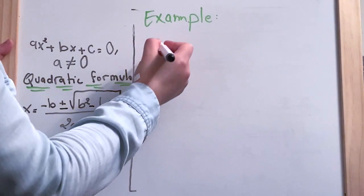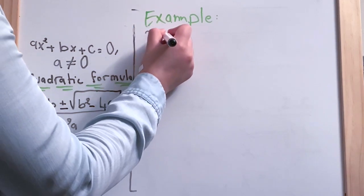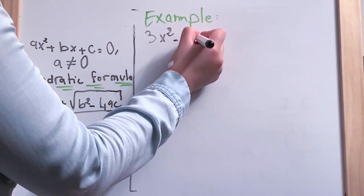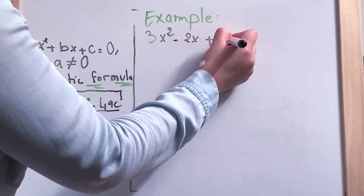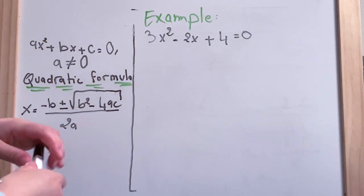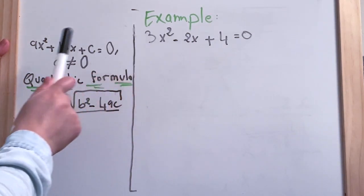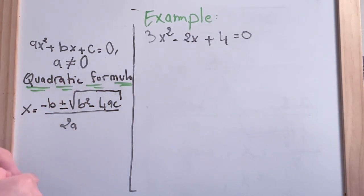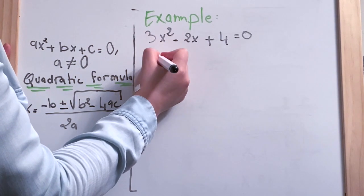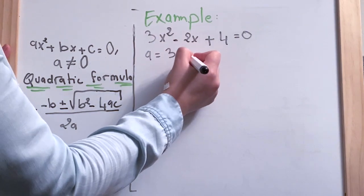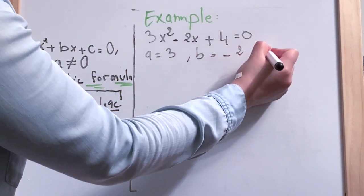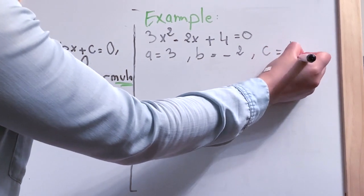Another example: 3x squared minus 2x plus 4 equal to zero. We're going to do the same thing — find out a, b, and c, and plug them into the formula. So here a equals 3, b equals minus 2, and c equals 4.